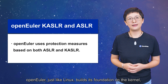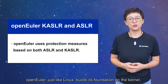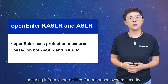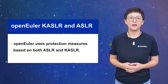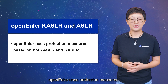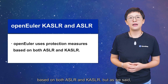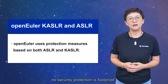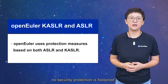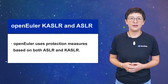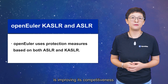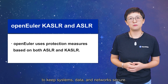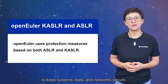OpenEuler, just like Linux, builds its foundation on the kernel, securing it from vulnerabilities for enhanced system security. OpenEuler uses protection measures based on both ASLR and KASLR, but as we said, no security protection is foolproof. That's why the team behind OpenEuler is improving its competitiveness to keep systems, data, and networks secure.